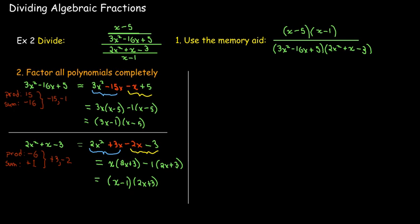And those numbers are plus 3 and minus 2. So I'll replace the plus x with 3x minus 2x, factor by grouping. And now I'm ready to look for forms of 1. And it would seem that the forms of 1 are x minus 5 over itself and x minus 1 over itself.